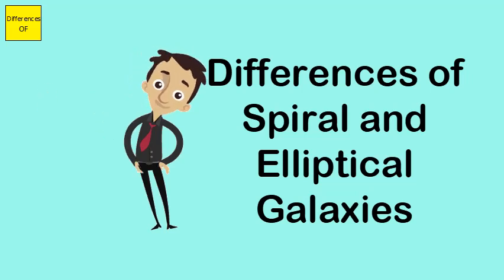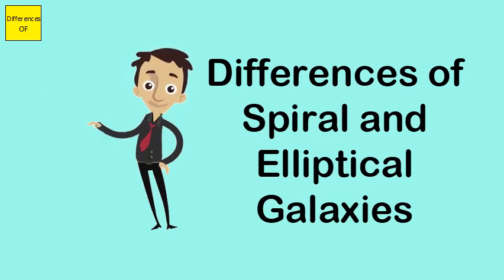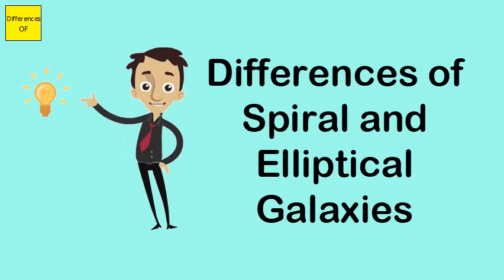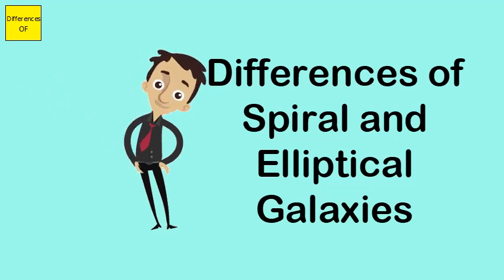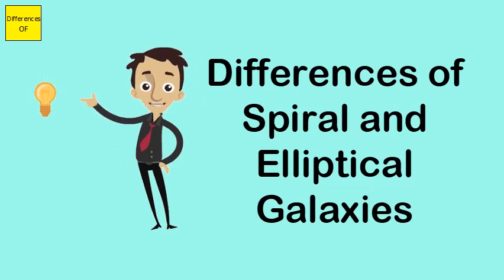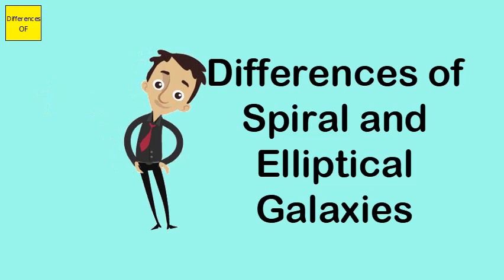Spiral galaxies are the most common type of galaxies and contain three-quarters of all the galaxy population. Elliptical galaxies are relatively rare and contain only one-fifth of the galaxy population.